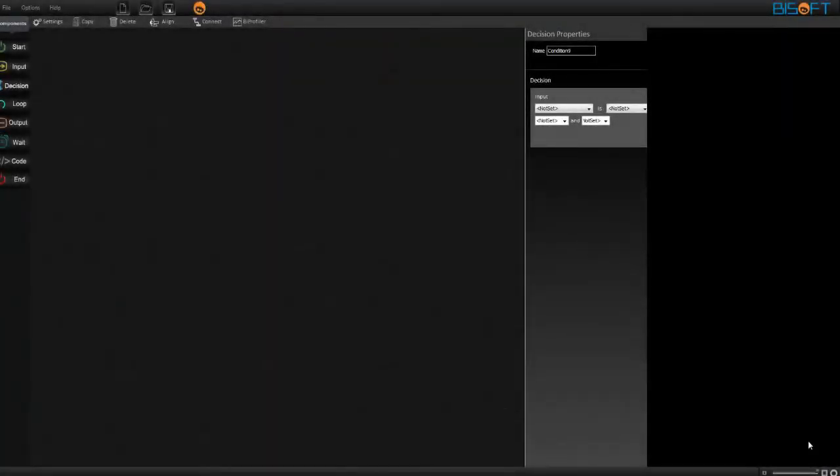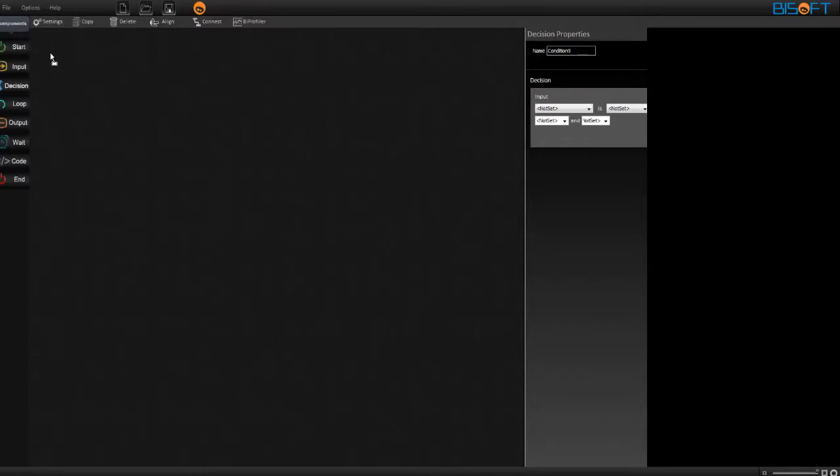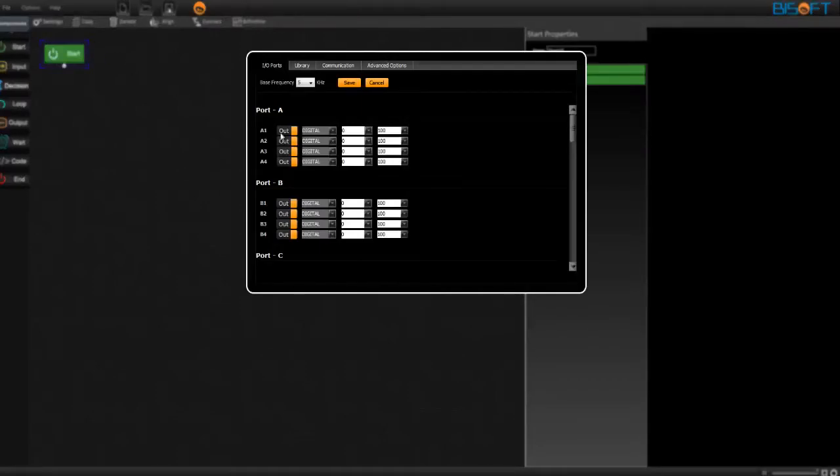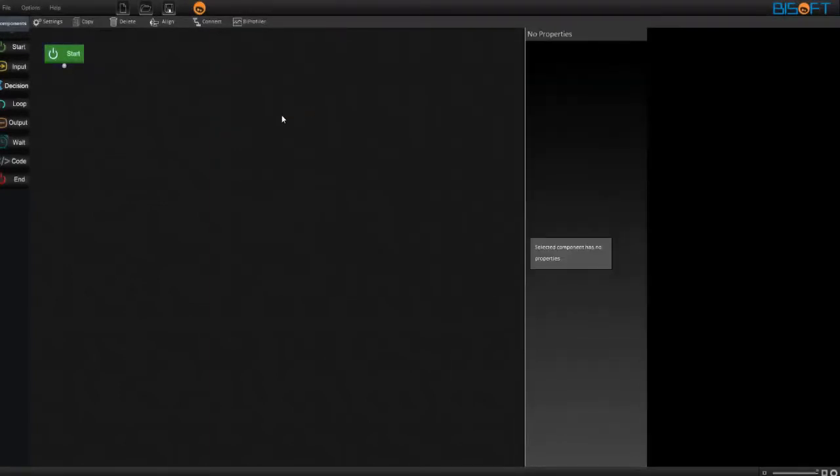Let's look at the programming part for the door open alarm experiment. Drag a start component and under settings tab, make A1 in and analog. Save. Now we observe two values for the IR sensor that is when the door is closed and when the door is open. When the door is closed, there are no changes observed in the sensor value. And when the door is open, the changes are observed and we need to ring the alarm.